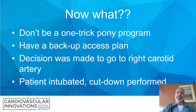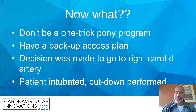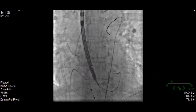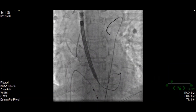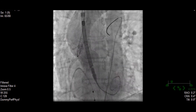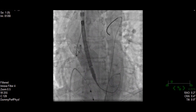So now what? My advice: don't be a one-trick-pony program — have a backup access plan. The decision was made to go to a right carotid artery. The patient was electively intubated and a cutdown was performed with my surgical colleague. Once we had performed that, we placed the valve via the right common carotid.